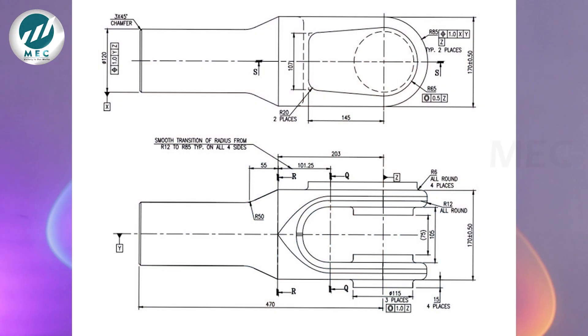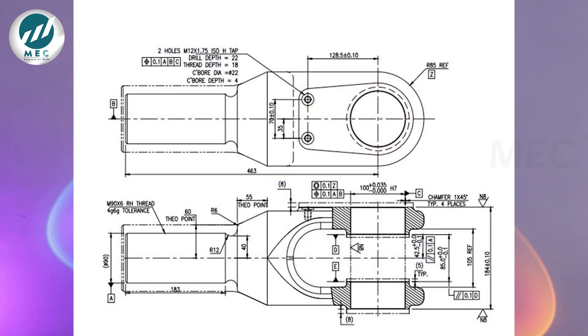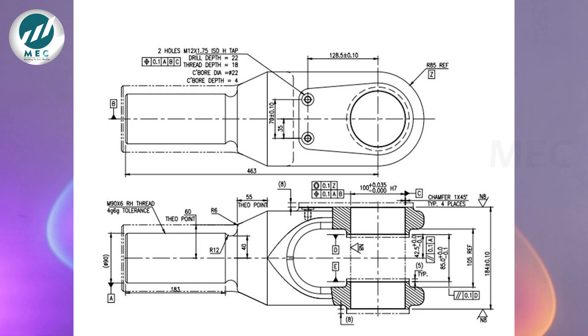For example, in the casting drawing the diameter of this particular structure is 120 mm, but in the machining drawing it is only 90 mm — a difference of 30 mm, which represents the material removed by machining. If you apply the 90 mm dimension in the casting drawing, it will cause confusion to the foundry. That is why the machining drawing and casting drawing must be different.